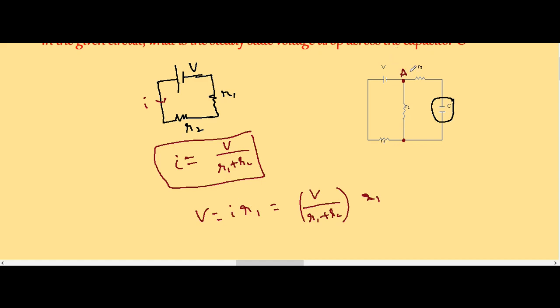Let's say this point is A, this is B. VAB is the potential difference across the capacitor.